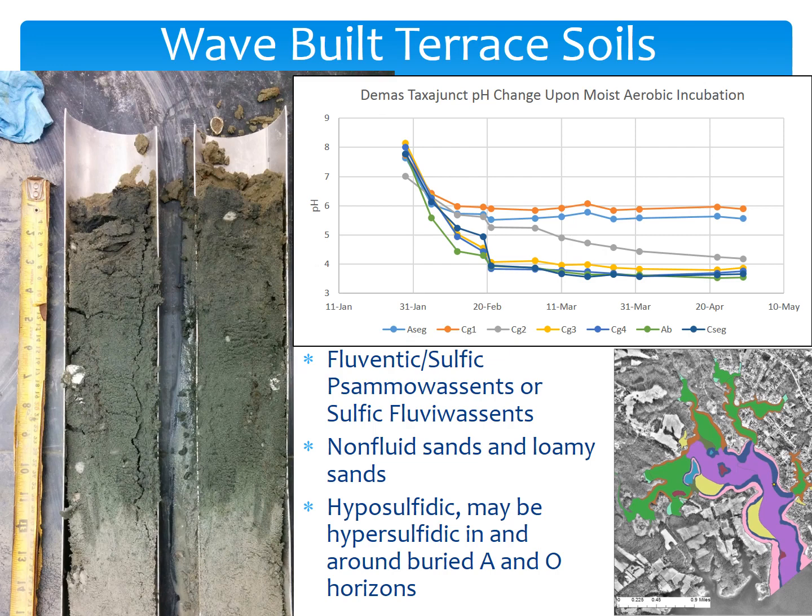Then we have the wave-built terrace soils, moving into slightly deeper water. Just off the edge of the wave-cut platform, we have a submerged wave-built terrace — sandy and coarse material that is cut from the shore as sea level rises and waves beat the shore. They wash the fines out and carry sands and coarse materials into just deep enough water where they can deposit, building up part of that shelf and the slope that drops abruptly into the rest of the landscape. Here we have fluventic or sulfic samawassents or sulfic fluviwassents — non-fluid sands and loamy sands that are hyposulfidic and maybe hypersulfidic in and around buried A and O horizons.